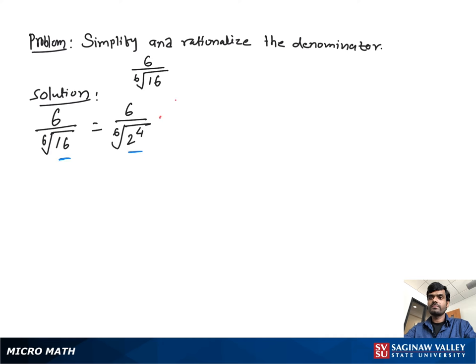As you see, we have 4 factors of 2, but we still need two more factors of 2 to make a perfect 6th root at the denominator. So what we do is multiply both the numerator and denominator with the 6th root of 2 squared.